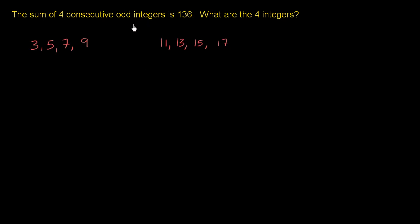I encourage you to pause this video right now and try to tackle this on your own before I take a go at it. Well, as you can imagine, a little bit of algebra might be handy here. So let's let x be equal to the smallest of the four. If x is the smallest of the four consecutive odd integers, how can we express the other three in terms of x?